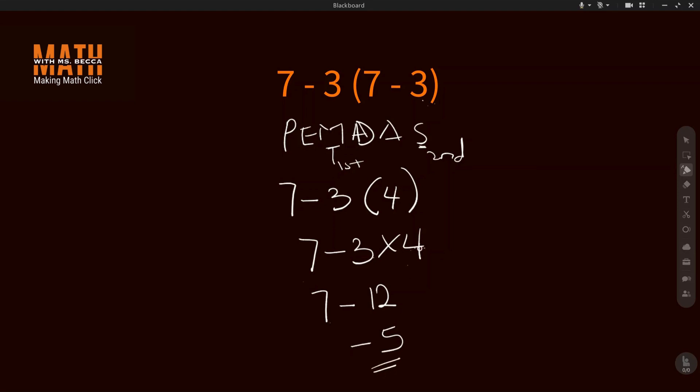So 7 minus 12 will give negative 5. So the answer to this question is negative 5.